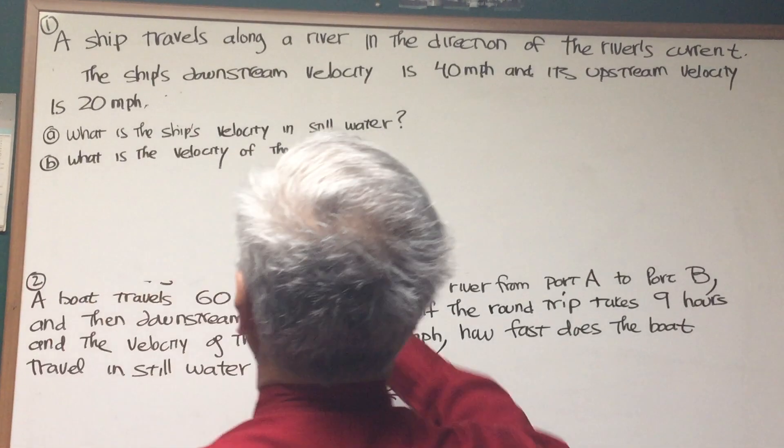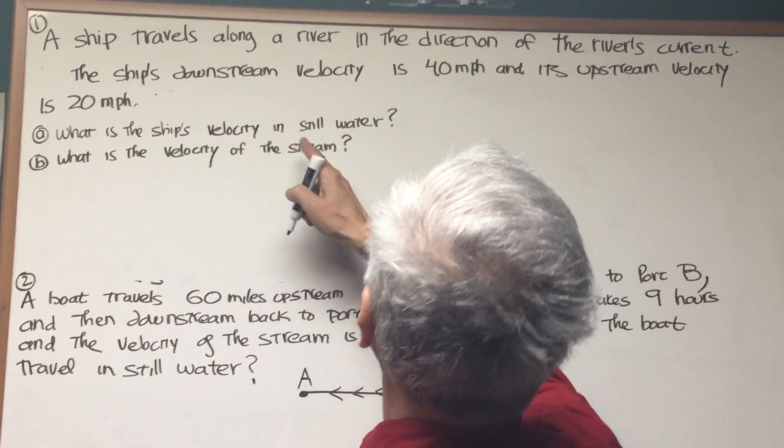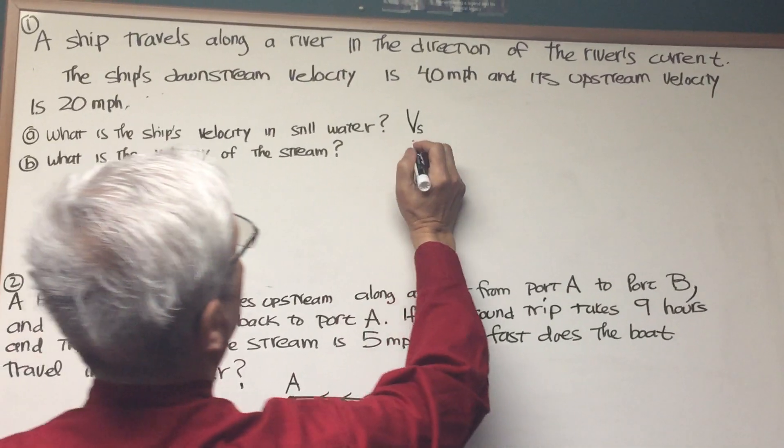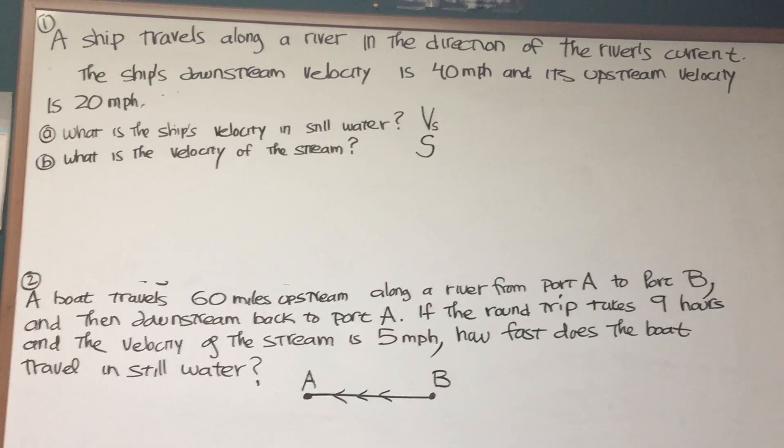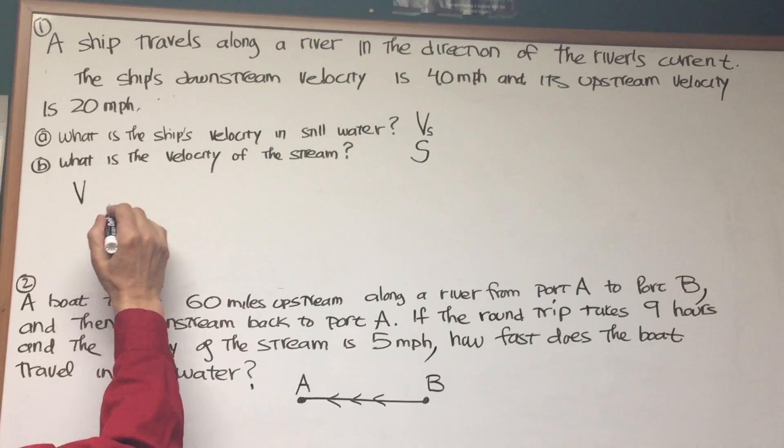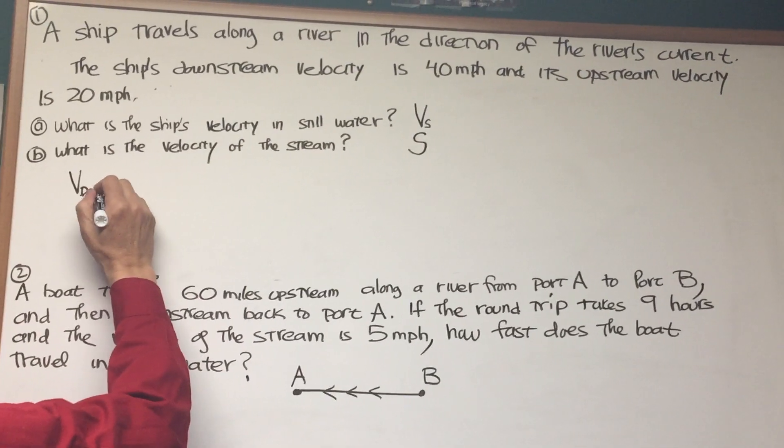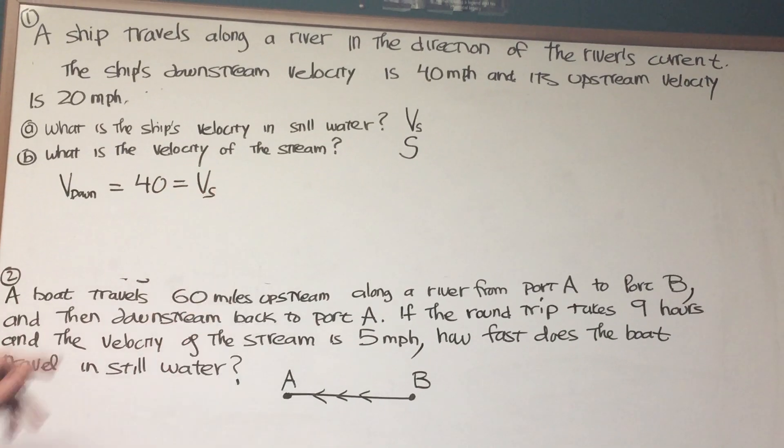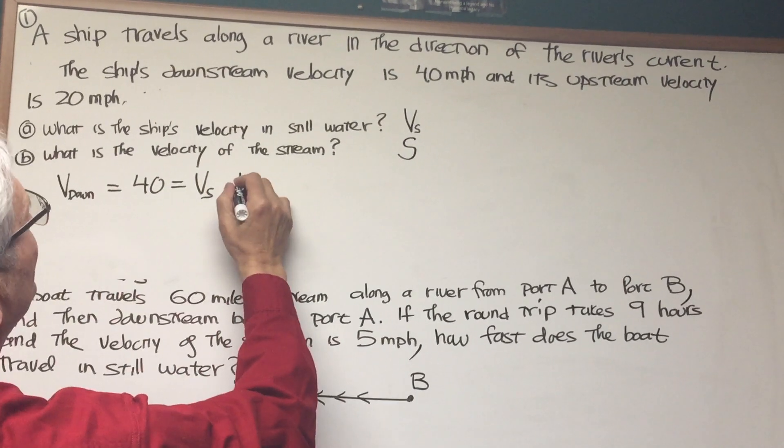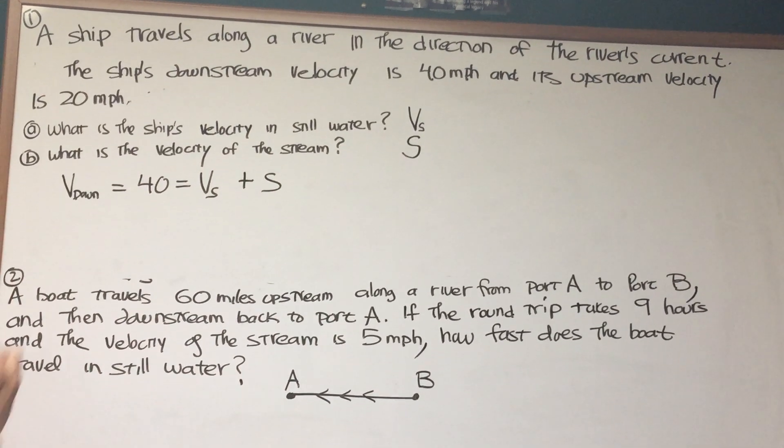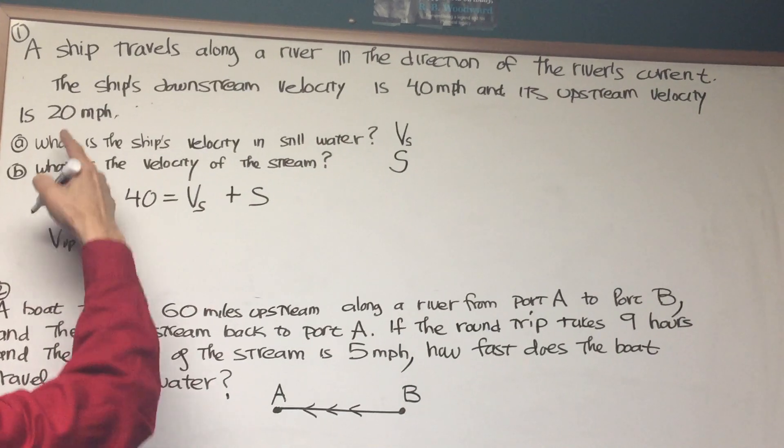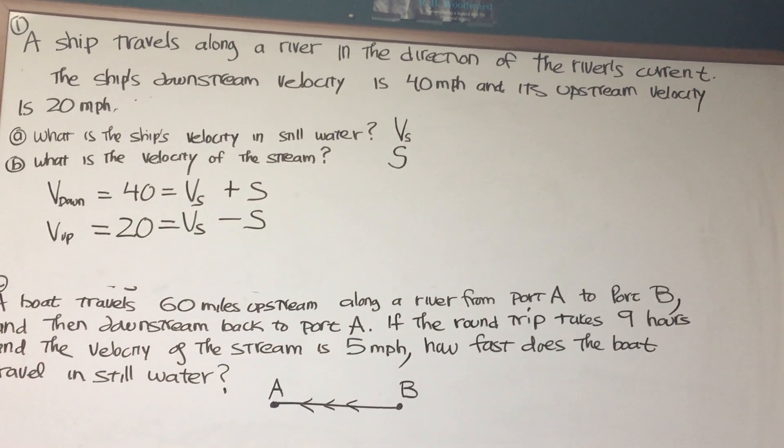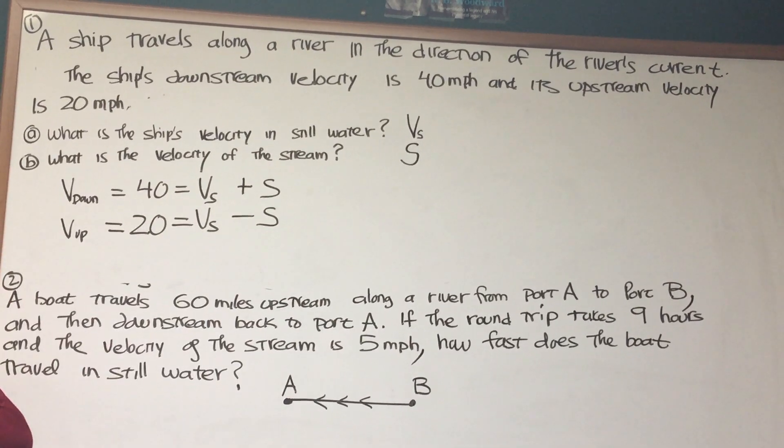So let's assign a couple of variables. Question A here is what is the ship's velocity in still water? So we're going to label that as V sub S. And what is the velocity of the stream? Let's regard that as S. So let's write down in the direction of the river's current. So the downstream velocity, which is 40, will be represented by the ship's velocity in still water plus the velocity of the stream. And the upstream velocity, which we know is 20, is going to be the velocity of the ship in still water minus the velocity of the stream.